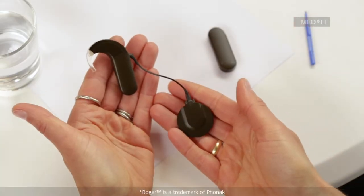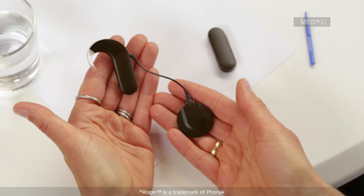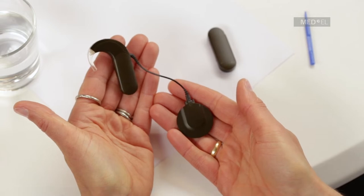To attach Roger 21 to Sonnet, first remove the standard battery pack cover.